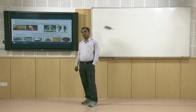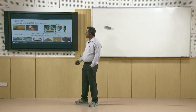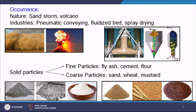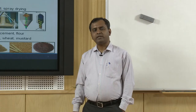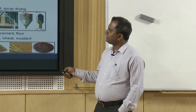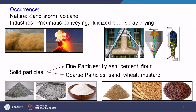We start with a slide showing all occurrences of gas-solid two-phase flow. In nature, we can find it in sandstorms and volcanoes — I have shown a sandstorm in a desert and a volcanic eruption, which exhibits typical gas-solid two-phase flow at the top. In industries, there are many applications including pneumatic conveying, fluidized beds, and spray drying.